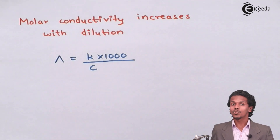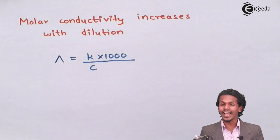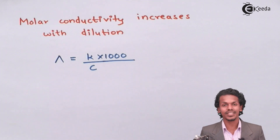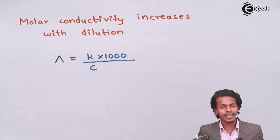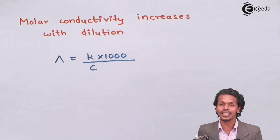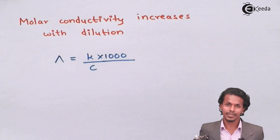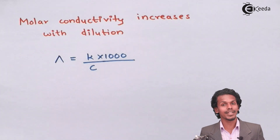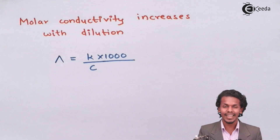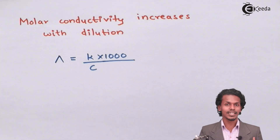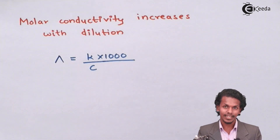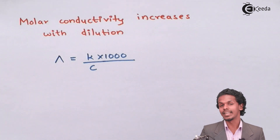When we dilute the solution, the concentration — that is, the number of ions present in the unit volume — decreases, and because of this, the conductivity also decreases. This happens due to the degree of dissociation and the increase in the volume of the solution. If the volume is increased, conductivity keeps decreasing. If the number of cations and anions is increased in a fixed volume of electrolyte, then conductivity can be increased.